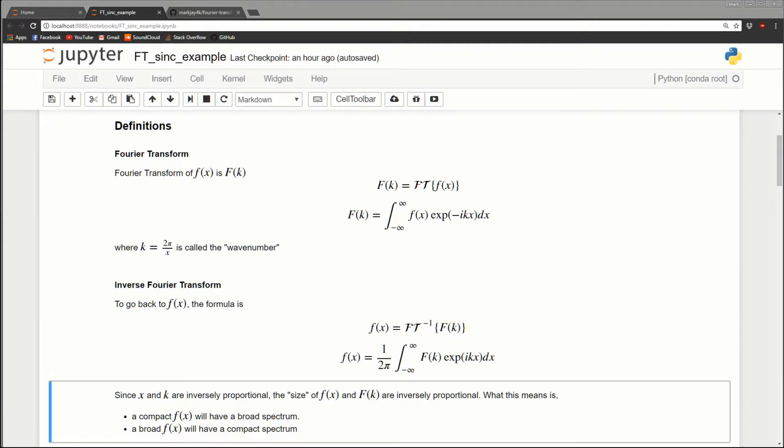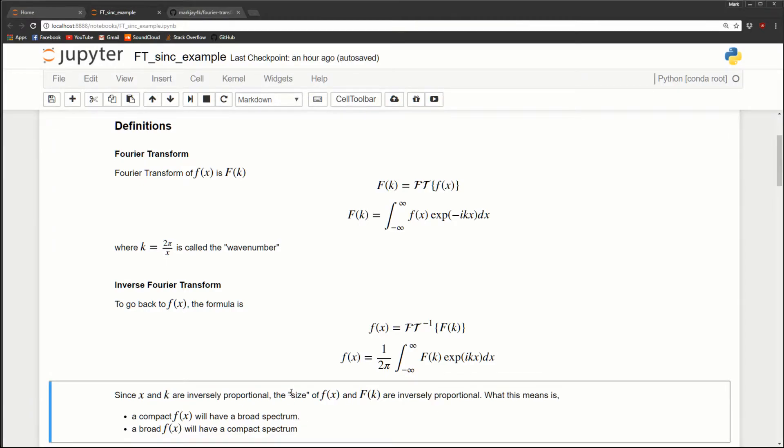One quick side note, you'll see that I have size in quotation marks. That's because there's this thing called Parseval's theorem, which says if we take f(x) and calculate its energy, and then we take F(k) and calculate its energy, those two quantities are always going to be equal. So using the term size is a little dodgy. But the main thing to keep in mind is the compactness and broadness relationship, which we just discussed.